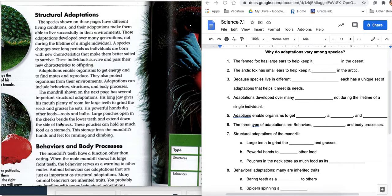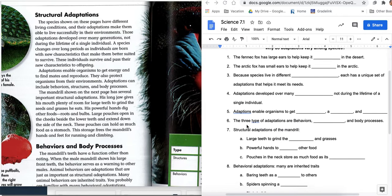Large pouches open in the cheeks beside the lower teeth to extend down the side of his neck. These pouches can hold as much food as a stomach, letter C. So he can put all these things he's eaten, just like you and I put food and we puff out our cheeks when we got too much food in our mouth. This guy has so much that he can literally have as much food in his mouth as he does in his stomach. This storage frees the mandrel's hands and feet for running and climbing. So all those things is just how that animal, based on what he eats, where he lives, and how he moves, are adaptations for him. Those are all structural.